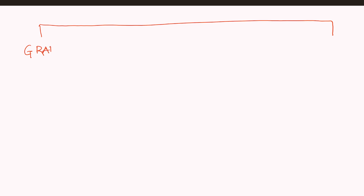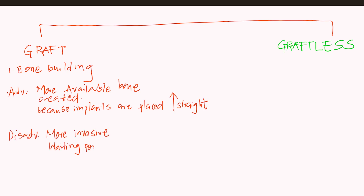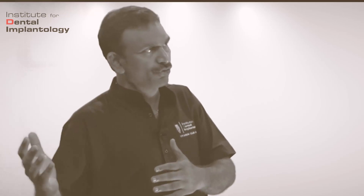There are two types of dentists or implantologists: one, the graft believers, and the second is the graftless believers. The best part I like in grafting options is they give complete teeth rehabilitation — that is 14 teeth, till second molars — which is not possible in the graftless solution.